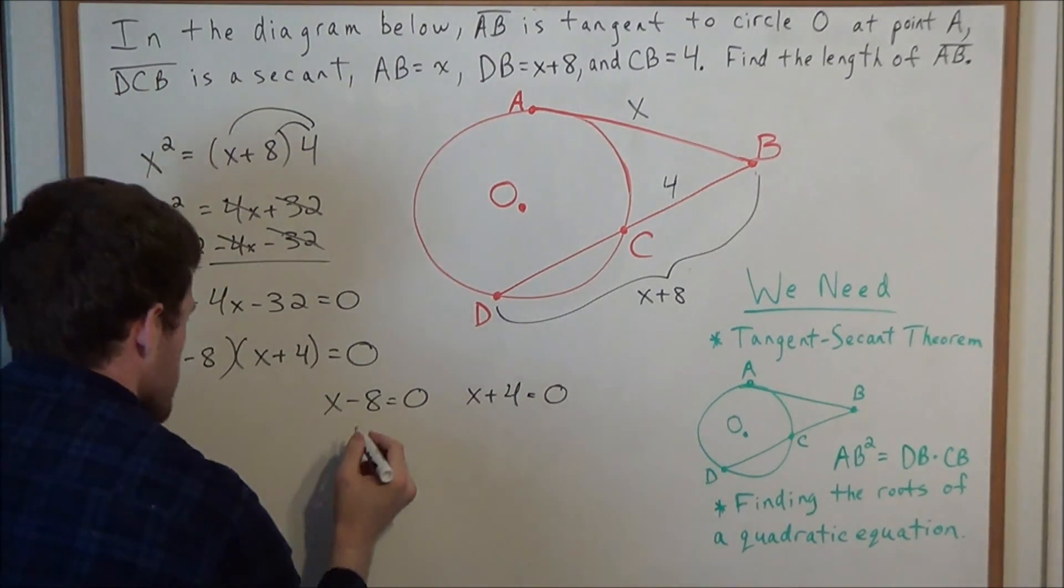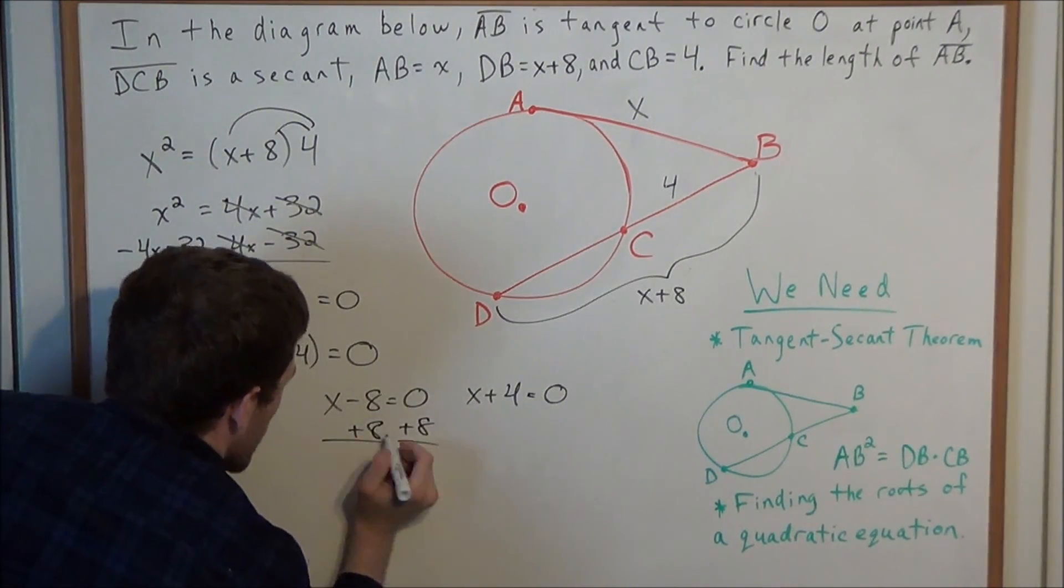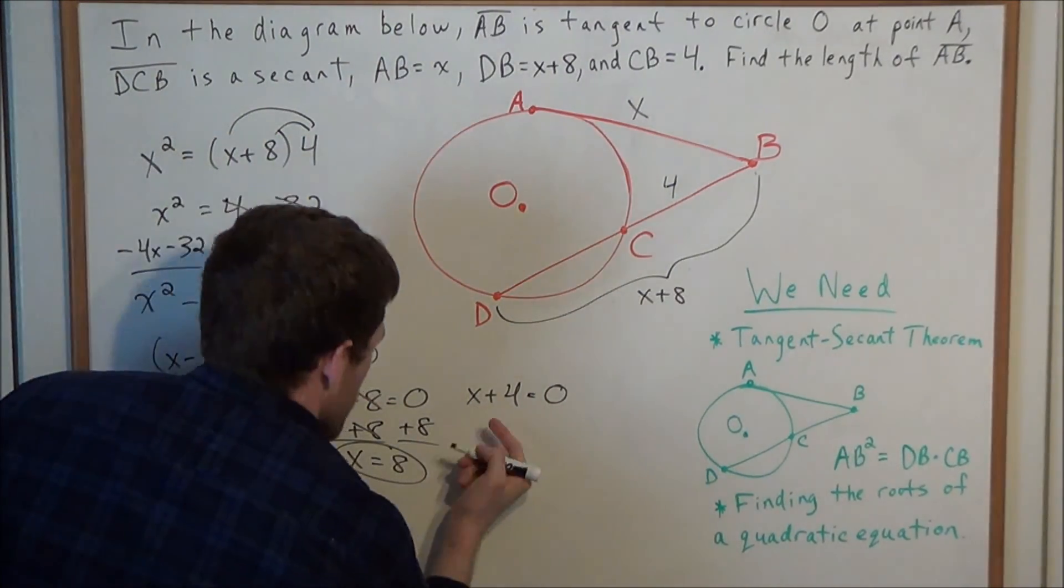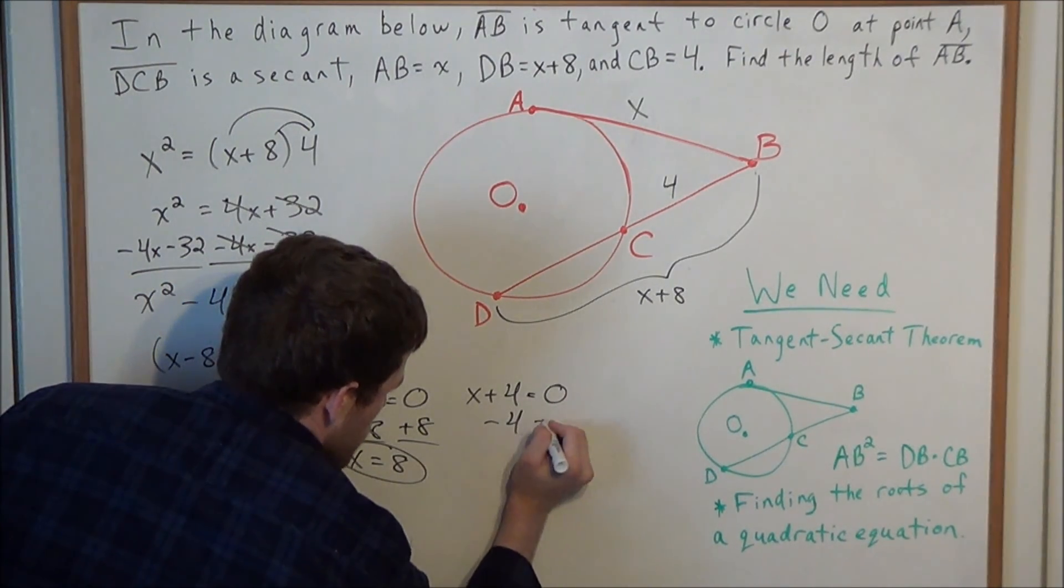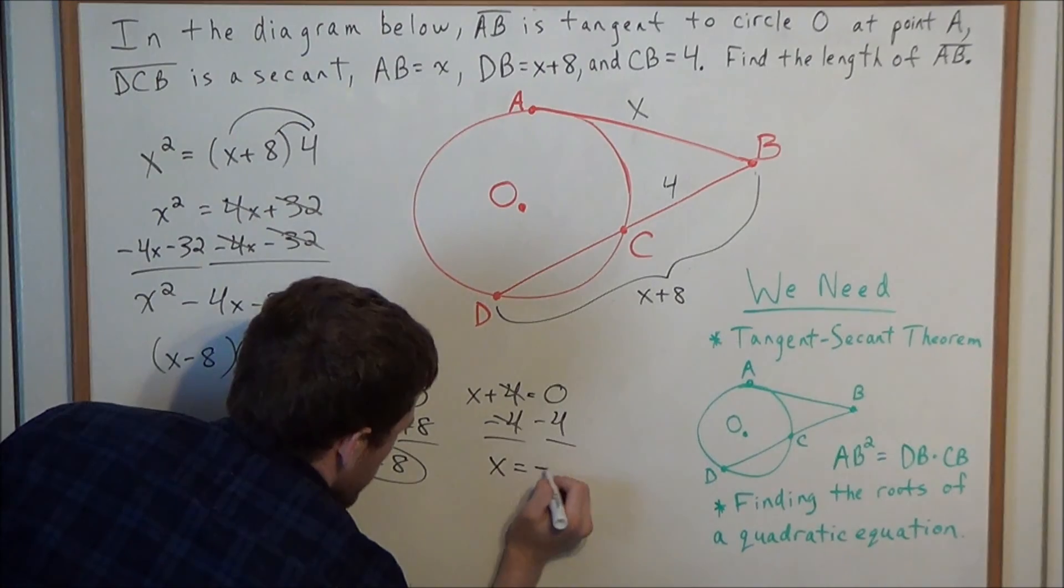So now let's solve the first case. We add 8 to both sides, and this gives us X equals positive 8. And now, for the second case, we're going to subtract 4 from both sides, and this gives us X equals negative 4.